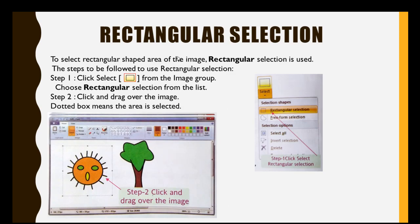Sometimes we have to choose a rectangular area for editing purposes. We will go to the rectangular selection and follow these steps: first, go to the image group and click on the SELECT option. Then a drop-down menu will appear as you are watching in the picture, and from this drop-down menu we will click on RECTANGULAR SELECTION.